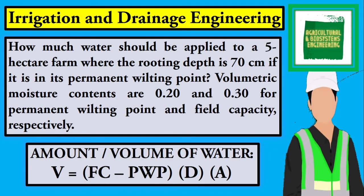Welcome to Agricultural and Biosystems Engineering Tutorials. This time, I will be solving this problem under Irrigation and Drainage Engineering. How much water should be applied to a 5 hectare farm where the rooting depth is 70 cm, if it is at its permanent wilting point?